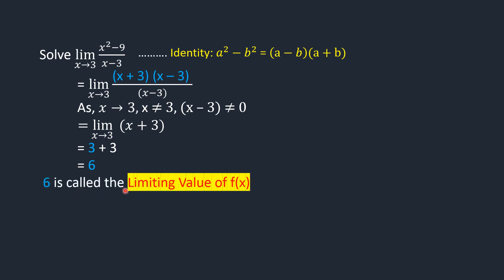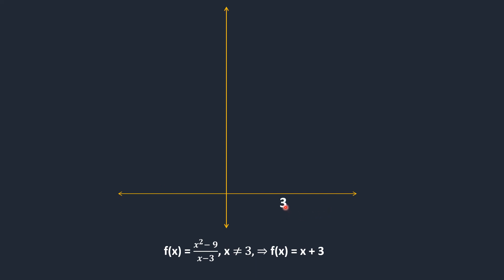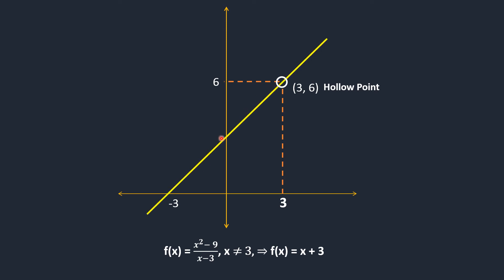Here, 6 is called the limiting value of f(x). Let us understand this graphically. We have f(x) equals x squared minus 9 over x minus 3. Since x is not equal to 3, the factor x minus 3 cancels and what remains is f(x) equals x plus 3. This being a linear function, its graph is a straight line. We mark the y-axis, x-axis, and origin with points at (-3, 0) and (0, 6). Since x is not equal to 3, the point (3, 6) will not lie on the graph; it is shown by a hollow point.